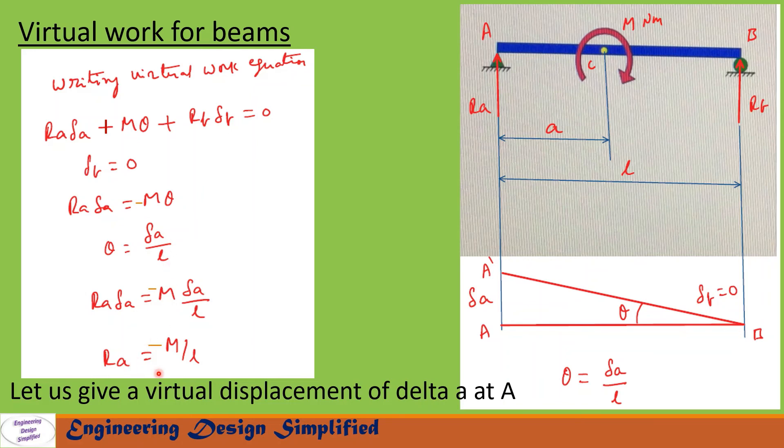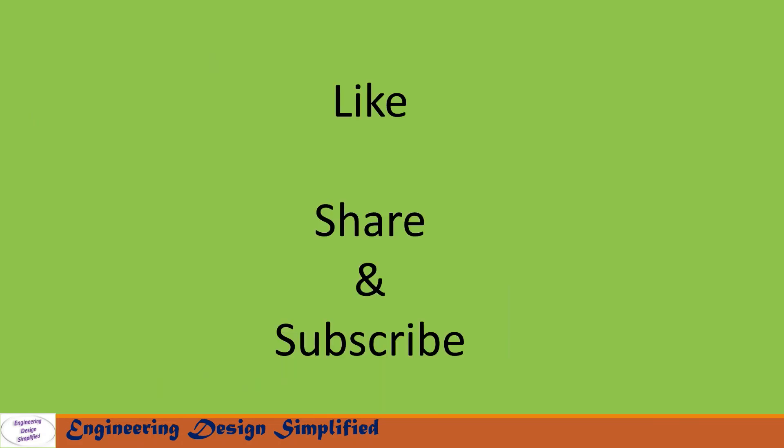After substituting and simplifying, we finally get Ra = −M/L. That's all for today's video. If you like this content, please like, share, and subscribe. Thanks for watching.